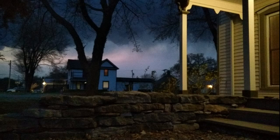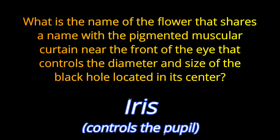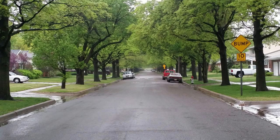Question 10. What is the name of the flower that shares a name with the pigmented muscular curtain near the front of the eye that controls the diameter and size of the black hole located in its center? The answer is the Iris.